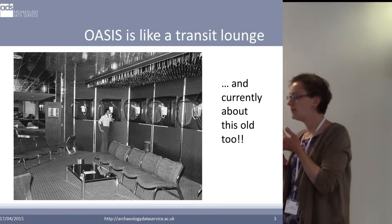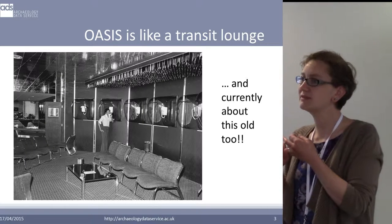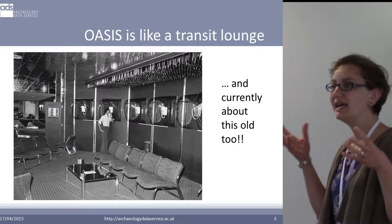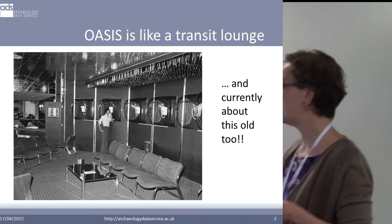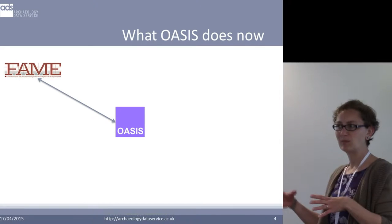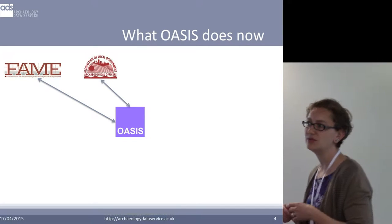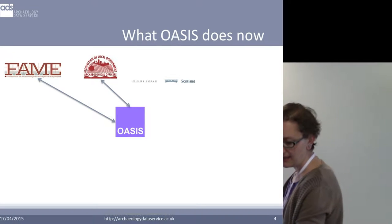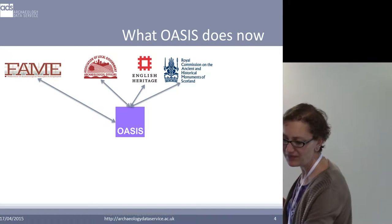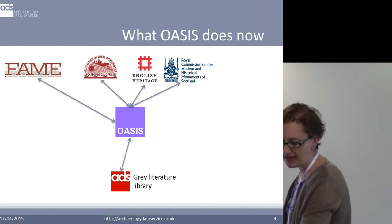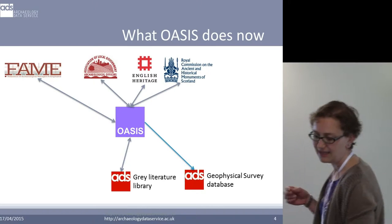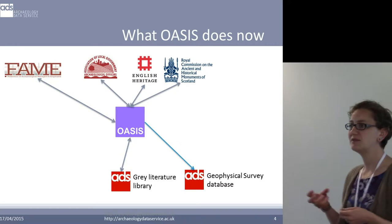Where our OASIS is at the moment: the Herald project, which has just finished, looked at the possibilities of redeveloping OASIS. Essentially, the OASIS system is a transit lounge for transferring data from one place to another. It takes data from fieldwork, people input that data into the system, that then goes out to HERs for checking where they can download the data. That then goes to Historic England and the Royal Commission for Scotland, and from there that record is signed off. It then goes into the grey literature library so the reports are made available online, and it goes into the geophysical survey database if there's a geophysical element to that OASIS record.